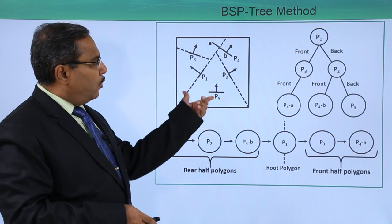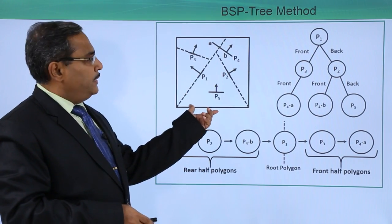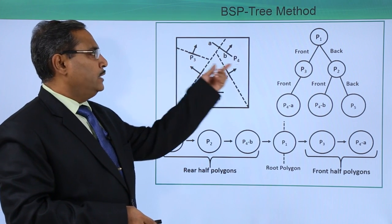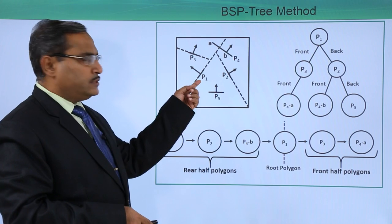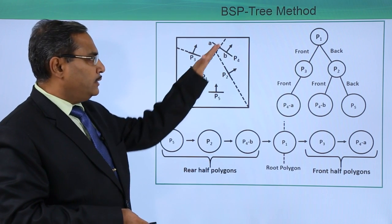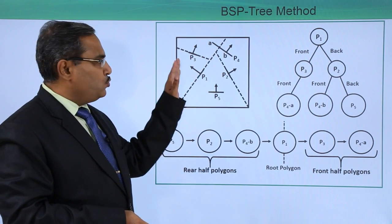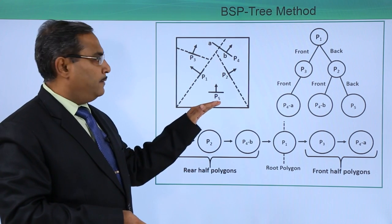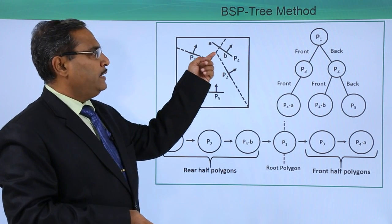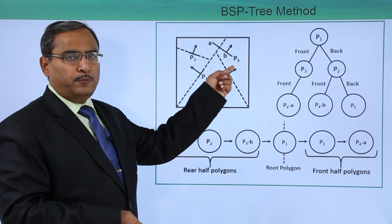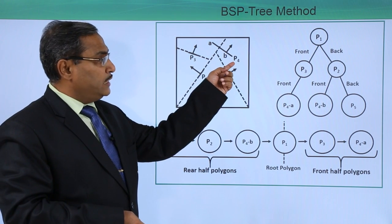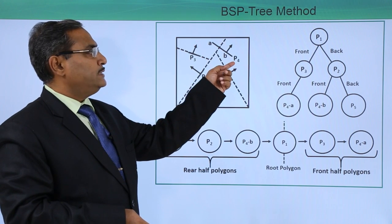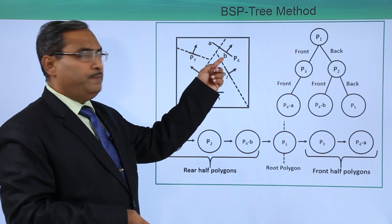In this example, we have polygons P1, P2, P3, P4, and P5. We are having two partition planes here, one at the front and another at the back. Here you see this particular partition plane is intersecting with polygon P4. That is why polygon P4 has been divided into two parts: P4a and P4b.